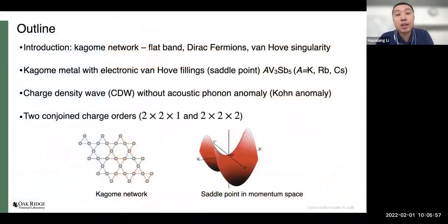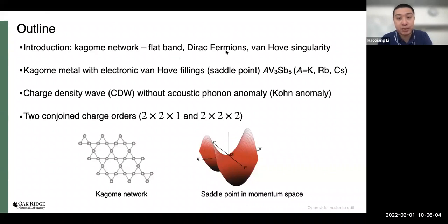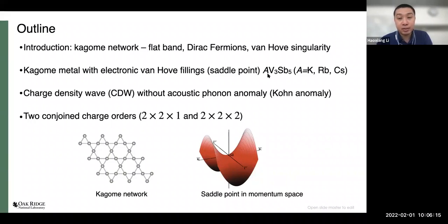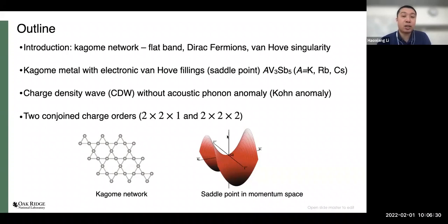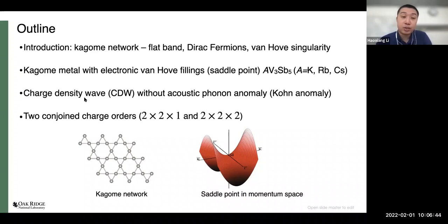Today I will focus on the Kagome network, which contains three distinct features: flat bands, Dirac fermions, and Van Hove singularity. The newly found alkali metal-vanadium Kagome network is the first discovery of a Van Hove filling, meaning the saddle point sits right exactly at the Fermi energy. This creates a lot of electronic instabilities that generate a charge density wave state, superconductivity, nematic orders, pair density wave, and others. Today I will focus on the charge density wave generated at the saddle point features.